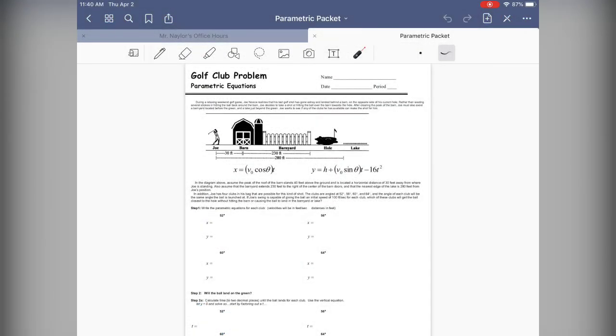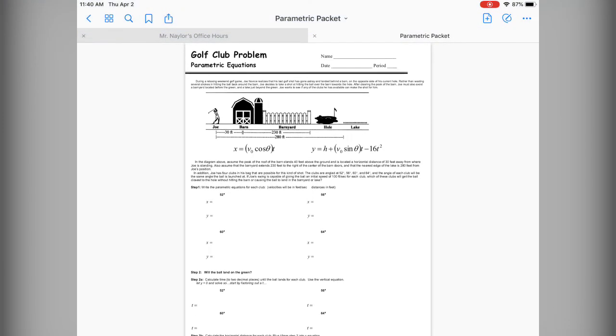Now, the very last day is the golf club problem. Now, day five this year we're actually going to make optional just because of our current reality. So the day five golf club problem you do not need to do. But if you do decide to do it, you will get a little extra credit for this entire parametric packet. Plus, it'll help you understand these projectile motion equations a little bit more that you would have studied in day four. So I encourage you to do day five if time permits and you decide to do so.